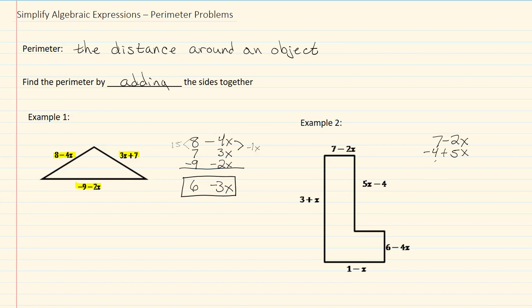My next one is 6 minus 4x. I didn't have to reorder that one. Then we have 1 minus x. And then the last one is 3 plus x.